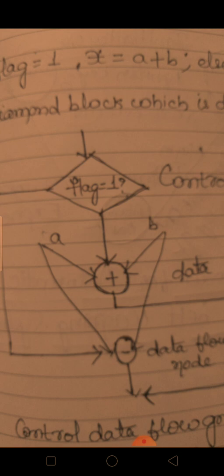In the CDFG diagram, the diamond shape inside represents the control node with flag equals 1. The data flow nodes use two circles — one represents plus and another represents minus. If x = a + b and y is the output of the minus node, then y = a - b. This is the understanding of the control data flow graph (CDFG) model. Thank you for listening.